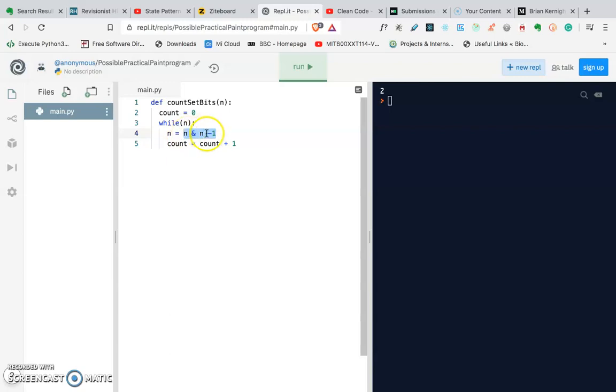Then this while loop strikes again. It checks if n is greater than zero, because zero zero zero zero zero zero is zero. So if it's true, that means it has a set bit in it - it has at least one set bit in it.